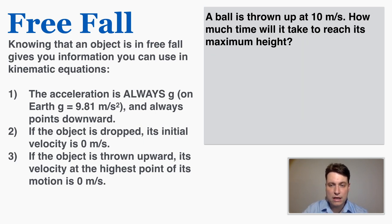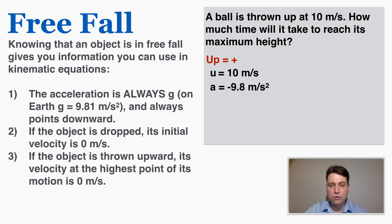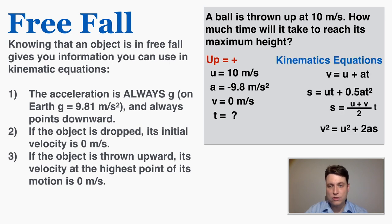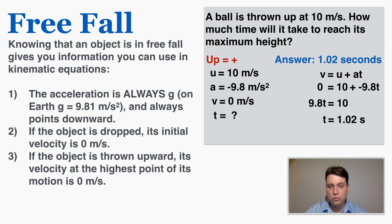We can ask another question about the same situation: how much time will it take for the ball to reach its maximum height? With up as positive, the initial velocity is 10 m/s, acceleration is negative 9.81 m/s², and final velocity is 0 m/s. Using the first kinematics equation to solve for t, I find that t equals 1.02 seconds — that's how long it takes to reach maximum height.